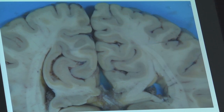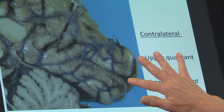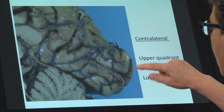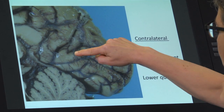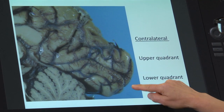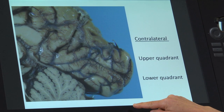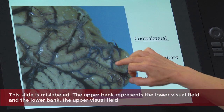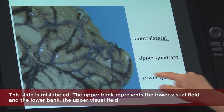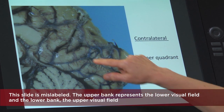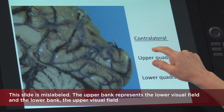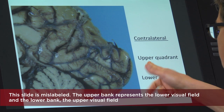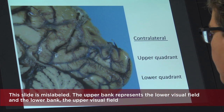Here is a view of the calcarine fissure — though note this diagram should be reversed: the upper bank actually has the lower quadrant, and the lower bank has the upper quadrant. Sorry about that.